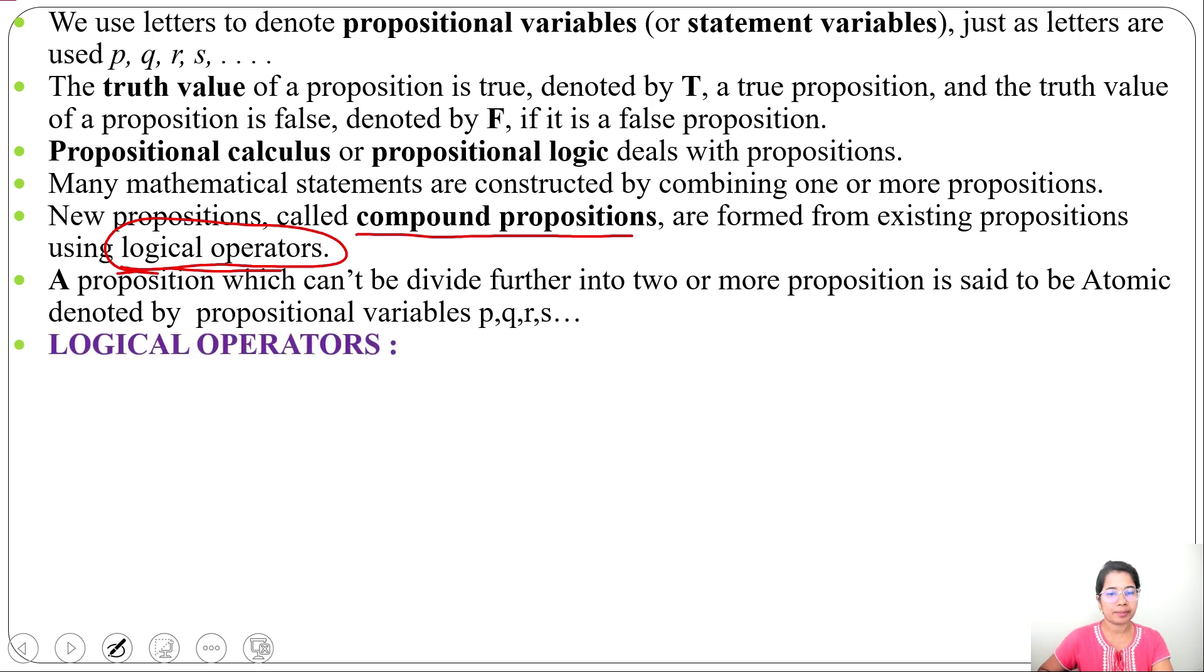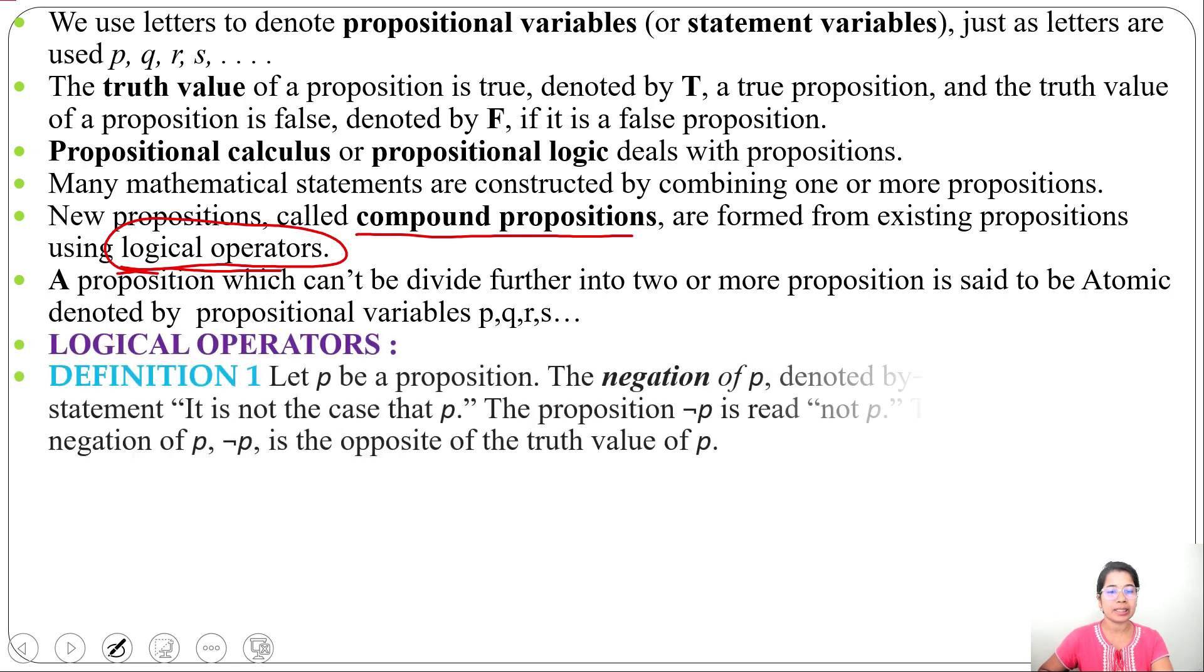We can use logical operators to combine one or more propositions. Let's discuss some logical operators. First logical operator is Negation. Let P be a proposition. The negation of P, denoted by ¬P (also P complement), is the statement 'It is not the case that P.' The proposition negation P is also read as 'not P.' The truth value of negation P is opposite of P. If P is true, then ¬P is false. If P is false, ¬P is true.